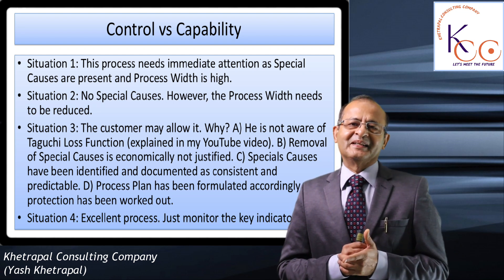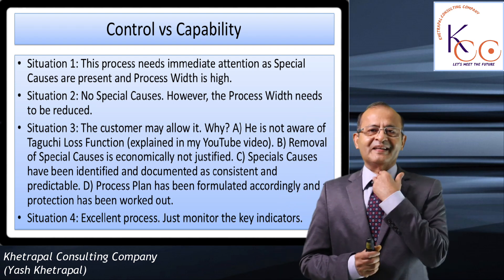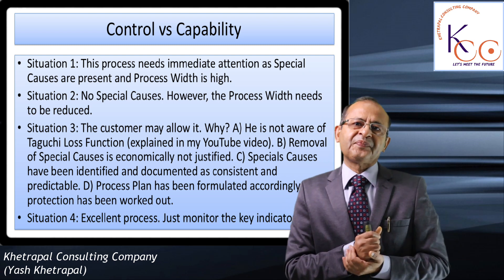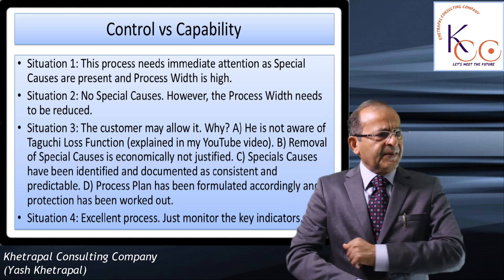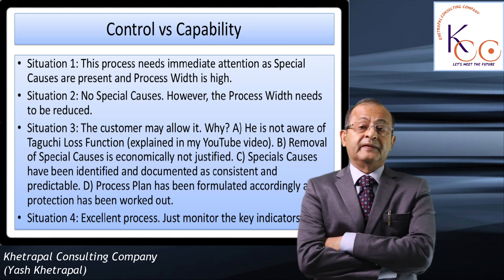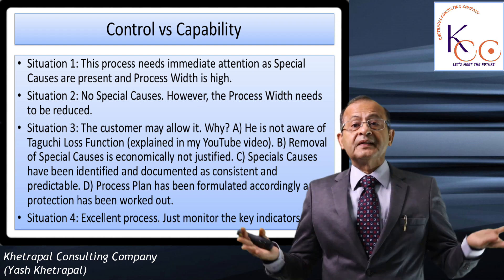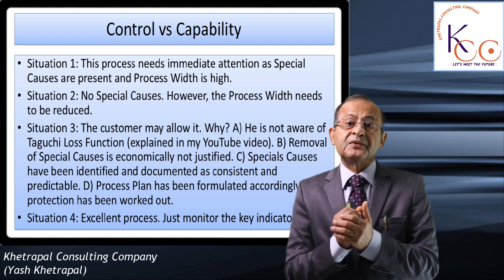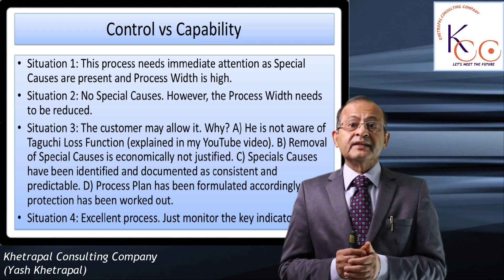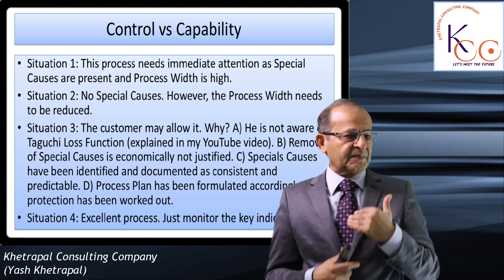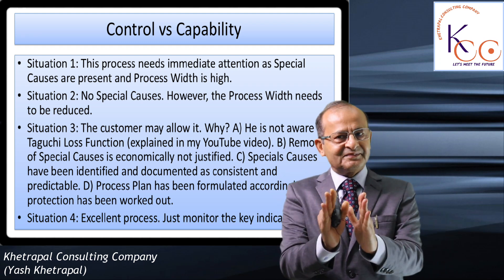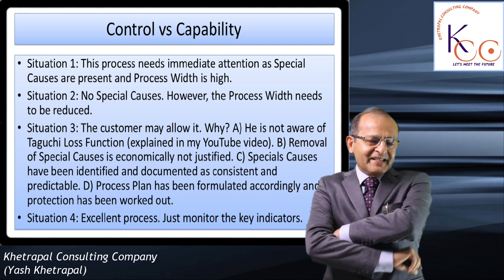For Taguchi loss function, please refer to my previous popular video on YouTube. In Stage 3, removal of special causes may not be economically justified — perhaps a new die or new press is required. Instead, you are predicting certain parameters, formulating a control plan, identifying special causes, documenting them, and working out a protection plan.